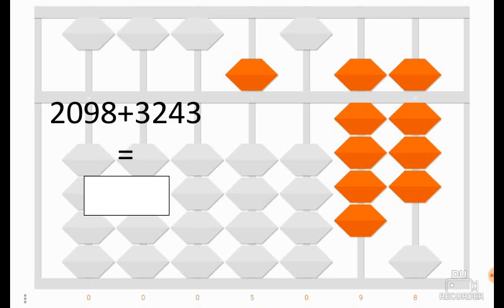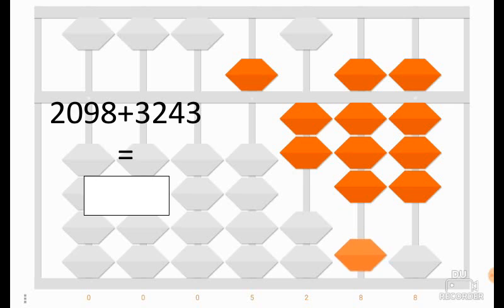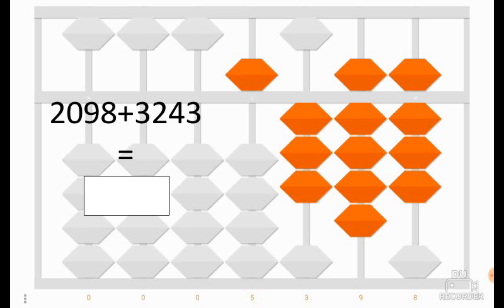After adding 3000, we would like to add 200, so we put 2 coins in the hundreds column. We have added 200. Next we would like to add 40, but we cannot add 40 because there are no coins remaining in the tens column. So 40 is equal to 100 minus 60. We add 100 and we remove 60. And we have added 40.